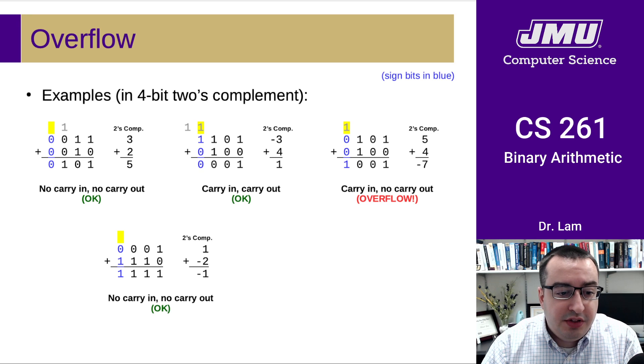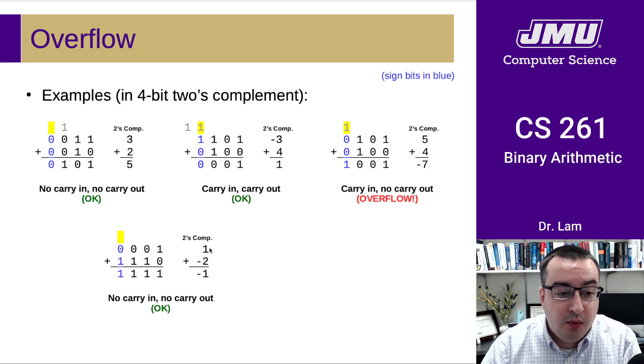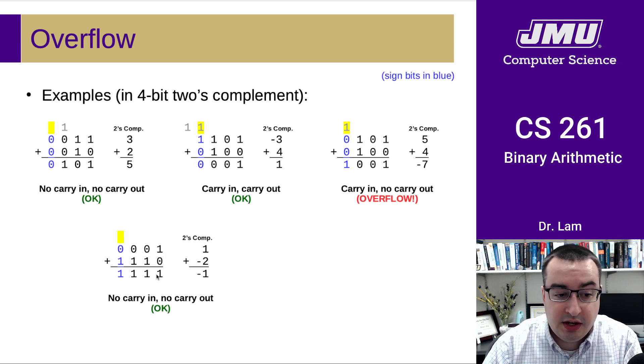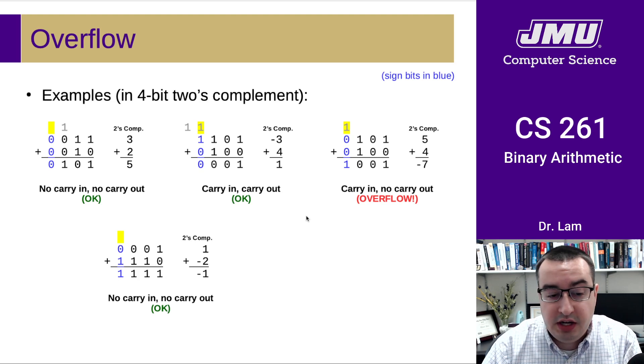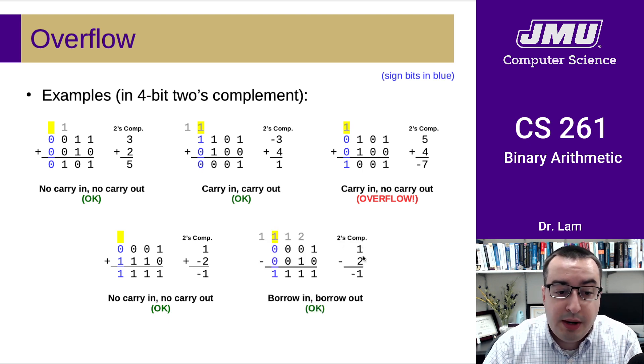Another interesting thing here is that we can add a negative number or we could think about subtracting. So here is one plus a negative two. And you can see here that this answer just becomes negative one if we interpret all these numbers as being two's complement. And so here we have no carry in and no carry out. But we could also do this as a subtraction, right? So we could have one minus two. So this is now a subtraction operation. All the rest of these were addition operations. So we have to think about this slightly differently.